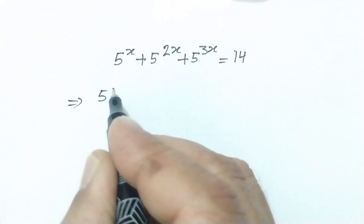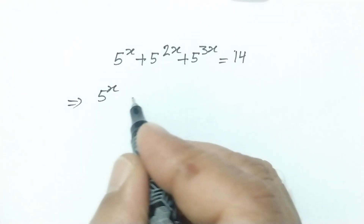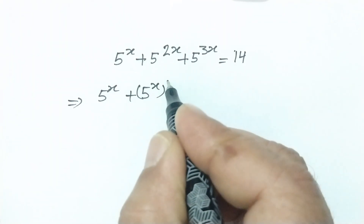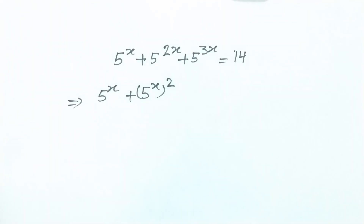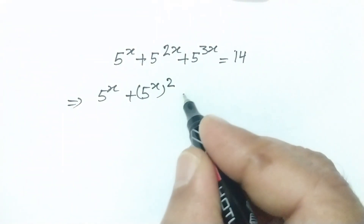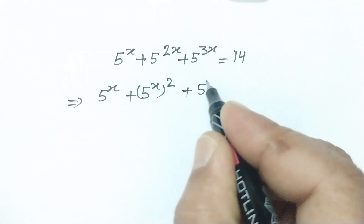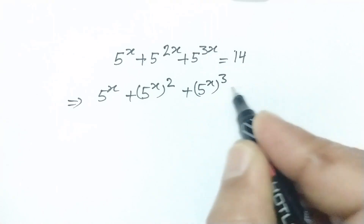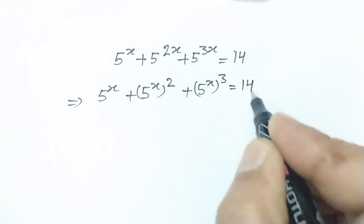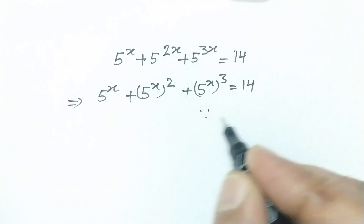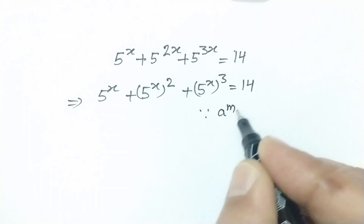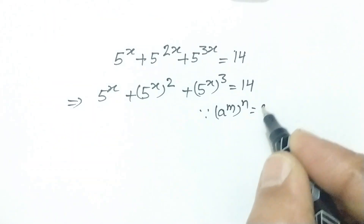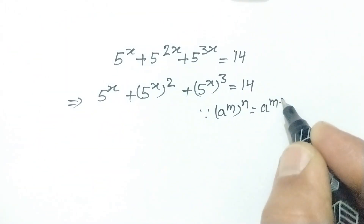We rewrite this as 5 to the power x, plus 5 to the power x squared, plus 5 to the power x cubed, is equal to 14. Because a to the power m to the power n is equal to a to the power mn.